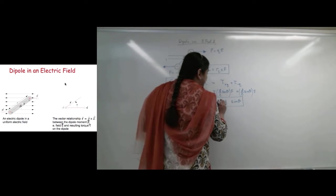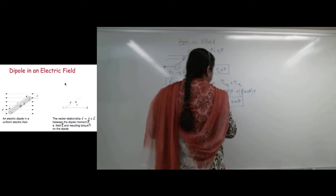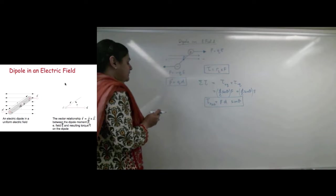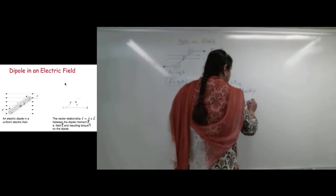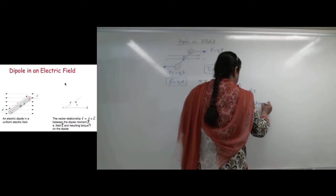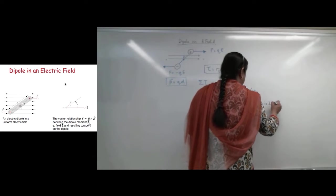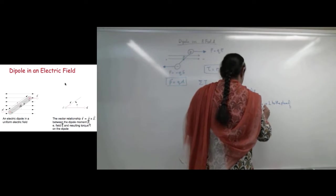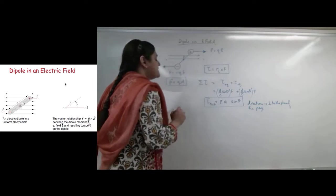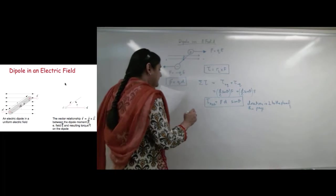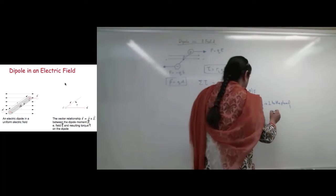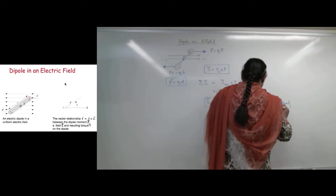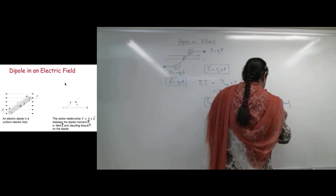I should probably write F here so that we don't confuse this with the derivative of F. So F D sine theta. And I will know that its direction, because it is perpendicular to the plane of the page. So that means it's coming out. What that means is my torque is going to be this way, E is that way, P is this way, and this is the angle theta.